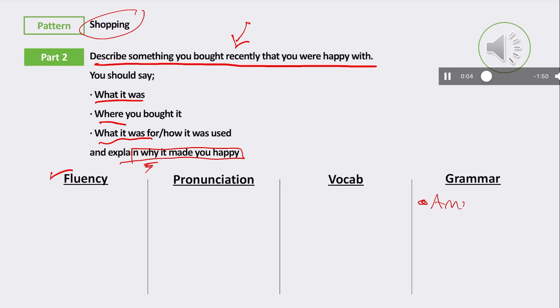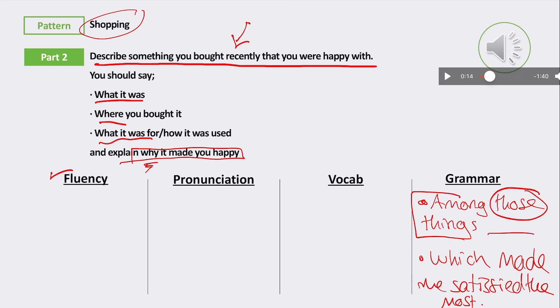I want to pick up a couple of things about grammar. At the start, he said 'among those things that I recently purchased, I would pick a cell phone which made me satisfied the most.' So 'which made me satisfied the most' - among those things that I've bought, you shouldn't be saying 'those things' because I don't know what things you bought. It should just be 'among the things that I purchased recently.' Because 'those' is for when I know what you're talking about. Second thing: 'which made me satisfied the most' should be 'which made me the most satisfied.'